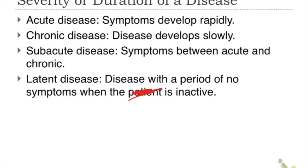Shingles is an example of latent infection. First you have chickenpox, then you recover, but the viruses hide and remain inactive — a latent period. Once the immune system becomes weakened, the virus reappears with vengeance, more painful this time because the virus resides at the peripheral nerve endings, which are pain receptors.